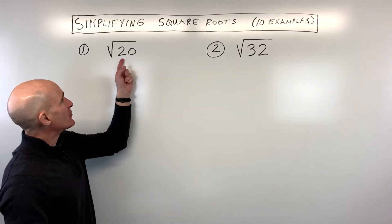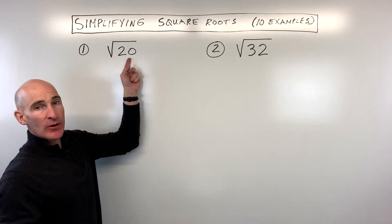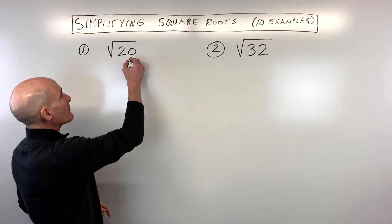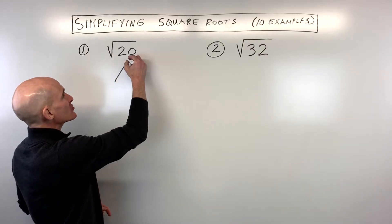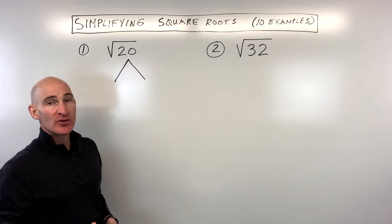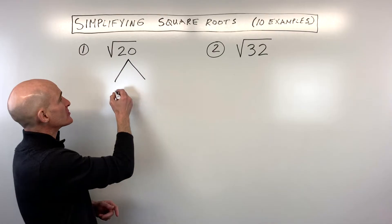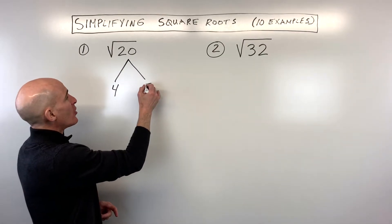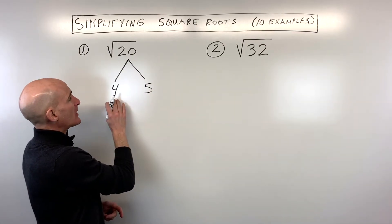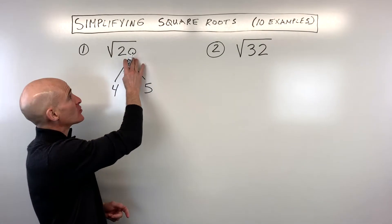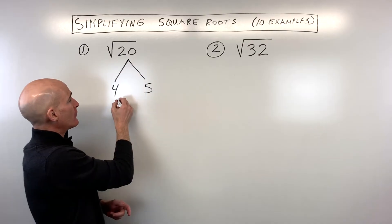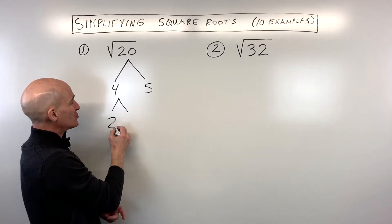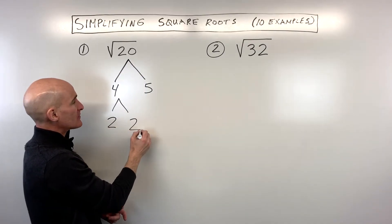So the first example is the square root of 20. What we're going to do is a prime factorization tree, meaning we're going to break this number down into its prime factors. So we ask: what two numbers multiply to 20? We could say 4 times 5 is 20, and then 4 we can break down into 2 times 2.